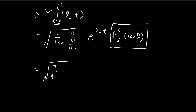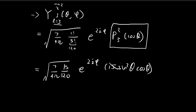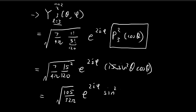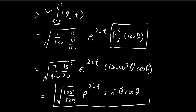Now we substitute everything back into the expression. We have 7 over 4π times 1 over 120 and the exponential e^(2iφ), then substituting in 15sin²θcosθ. Moving the 15 inside the square root — it becomes 15 squared — and simplifying all factors, the square root term becomes √(105/32π). Multiplying with the angular terms gives the final result: Y₂³(θ,φ) = √(105/32π) · e^(2iφ) · sin²θcosθ.